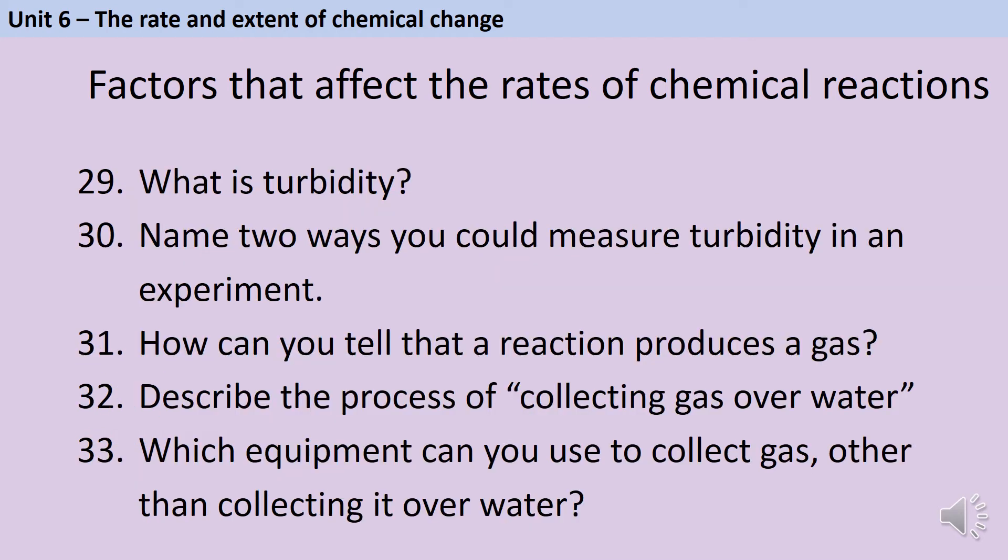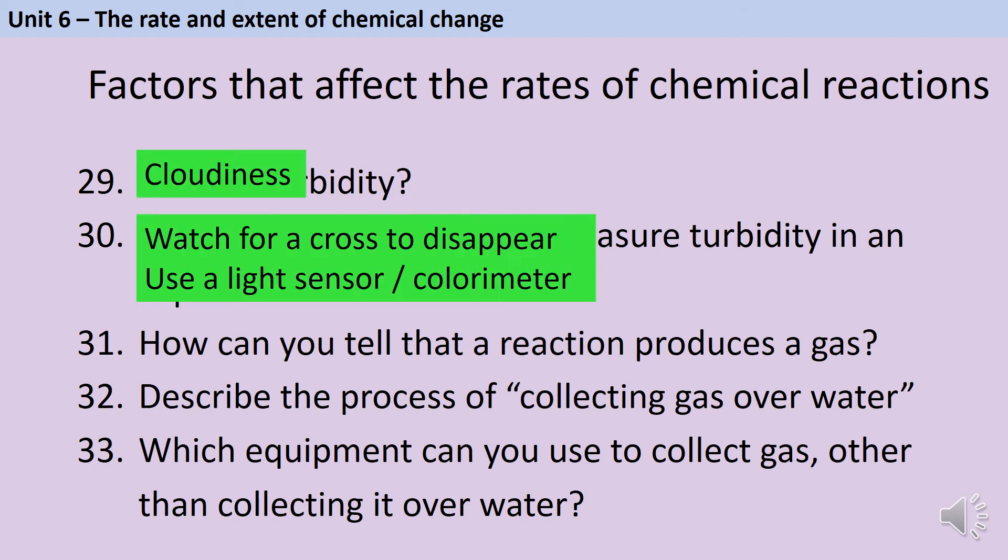Turbidity is just another name for cloudiness. If an exam question asks you to describe how you would use turbidity to show how the rate of reaction was affected, say by concentration, what they're asking is describe that experiment with the disappearing cross. Describe an experiment where a precipitate is formed and it goes cloudy, and then you measure how long it takes to go cloudy. You could either measure this by watching for a cross to disappear, but also you could use a light sensor or what's sometimes called a colorimeter, a piece of equipment that shines a beam of light through a sample and measures how much light is being absorbed.